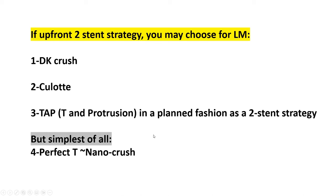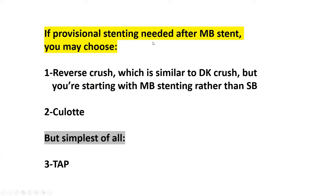If provisional stenting is needed after main branch stenting and you haven't obtained a good result with just ballooning the side branch left circumflex, then you may choose reverse crush — which is similar to DK crush but starting with main branch stenting rather than side branch stenting — CULOTTE technique, or simplest of all, the TAP technique. You have three options, but the simplest is TAP.